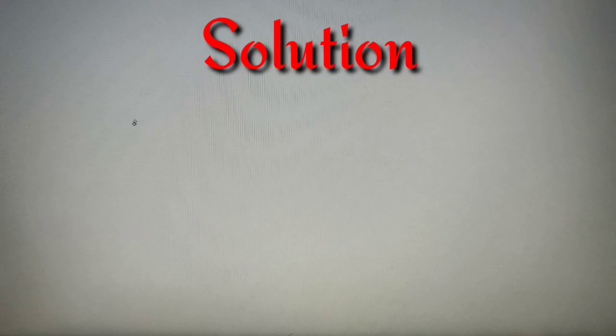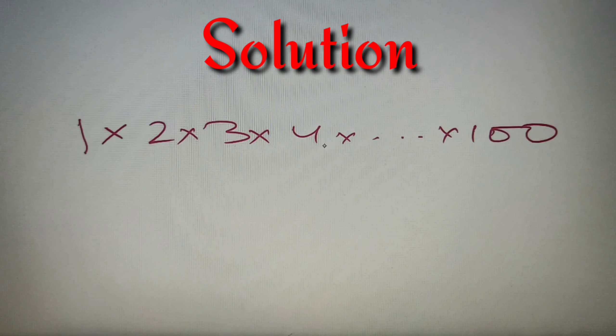Basically, our question is asking what is the number of zeros in which this given number ends - the product of first hundred positive integers. The hundred positive integers from 1 to 100 are as follows: 1 into 2 into 3 into 4 all the way up to 100. Since it was given the first hundred positive integers, the starting number will be 1 and the last number will be 100.